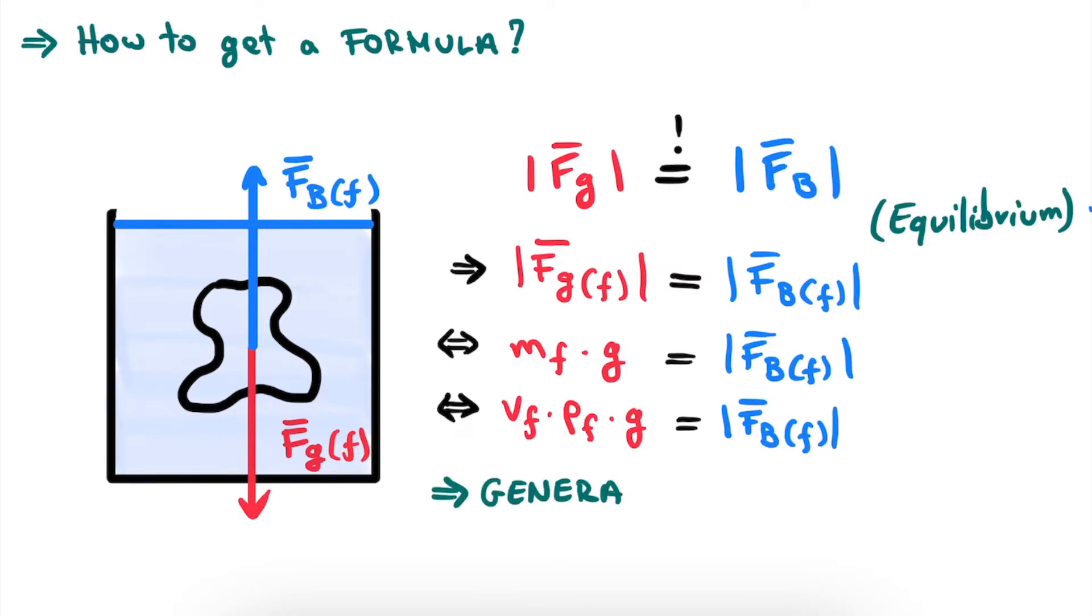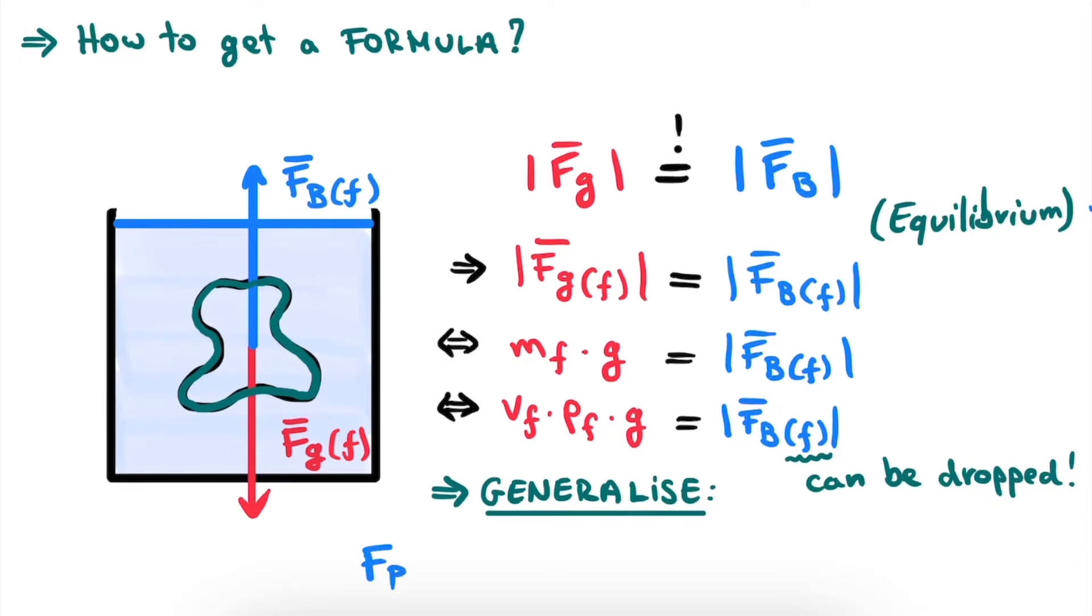Now to generalize this formula for any object, not just this fluid object, we remind ourselves that the origin of this buoyancy force is the net pressure force acting on the surface of the object by the surrounding fluid. Thus, this force does not depend on the material of the object and therefore, we can drop the subscript f on the buoyancy force. This leads to the general formula that the buoyancy force is equal to the volume submerged in the fluid times the fluid's density multiplied with the gravitational constant. And at this point, we are done. We have found what we wanted. A clear formula based on the system properties for the buoyancy force.